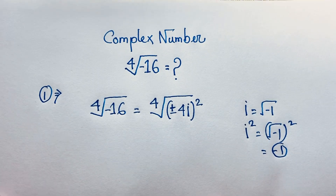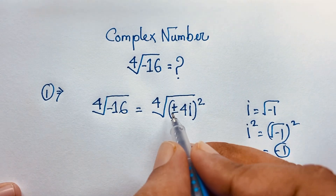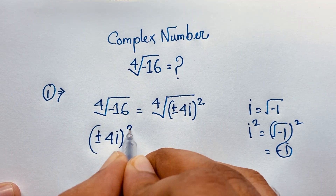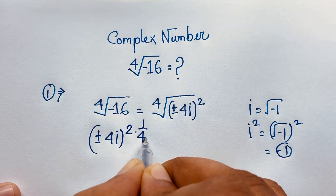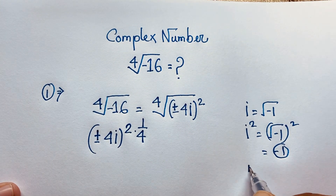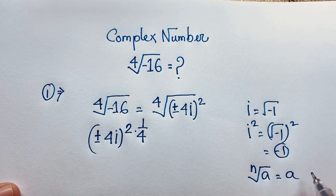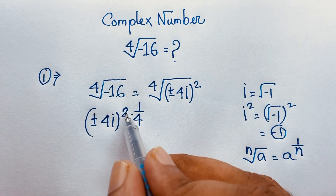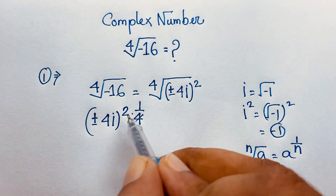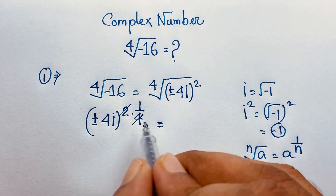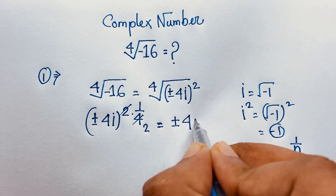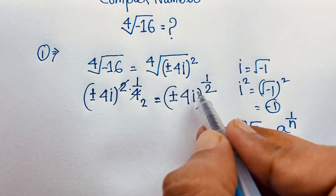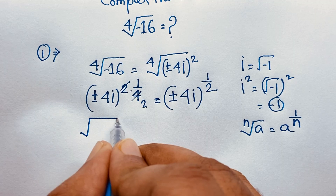It will be negative 16. Then, plus or minus 4i, bracket power 2. Then it will be to the power 1 over 4 — I take this 4 here. You know that n-th root of a equals a to the power 1 over n. So applying this math formula, it will be plus or minus 4i bracket, power 1 over 2. Power 1 over 2 means square root.